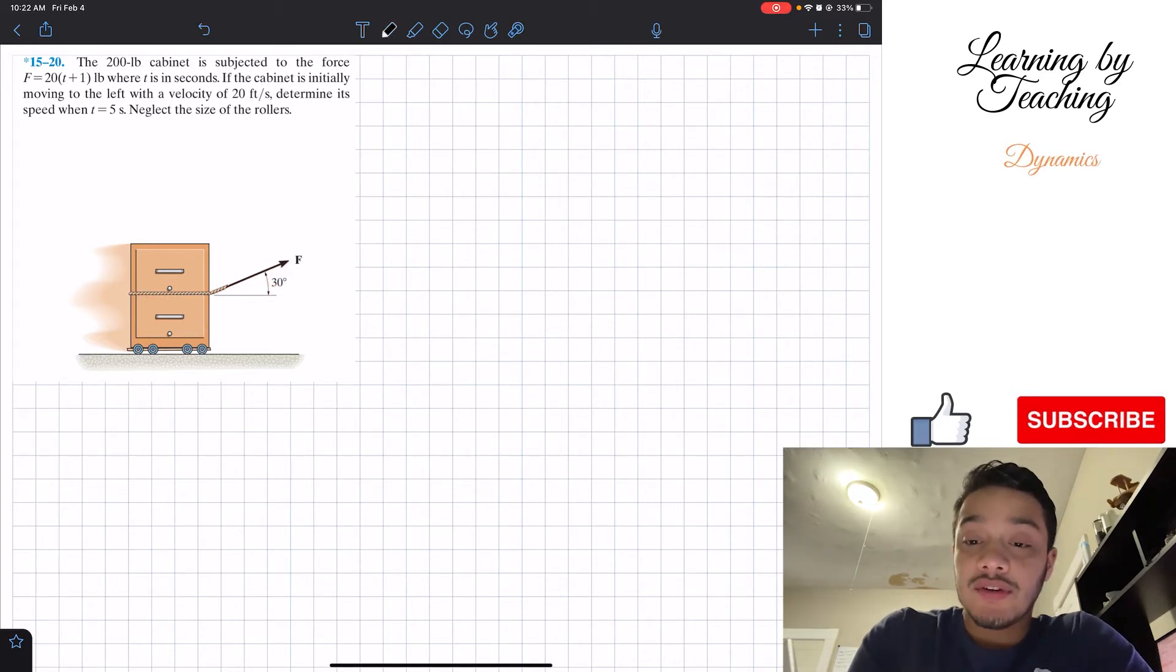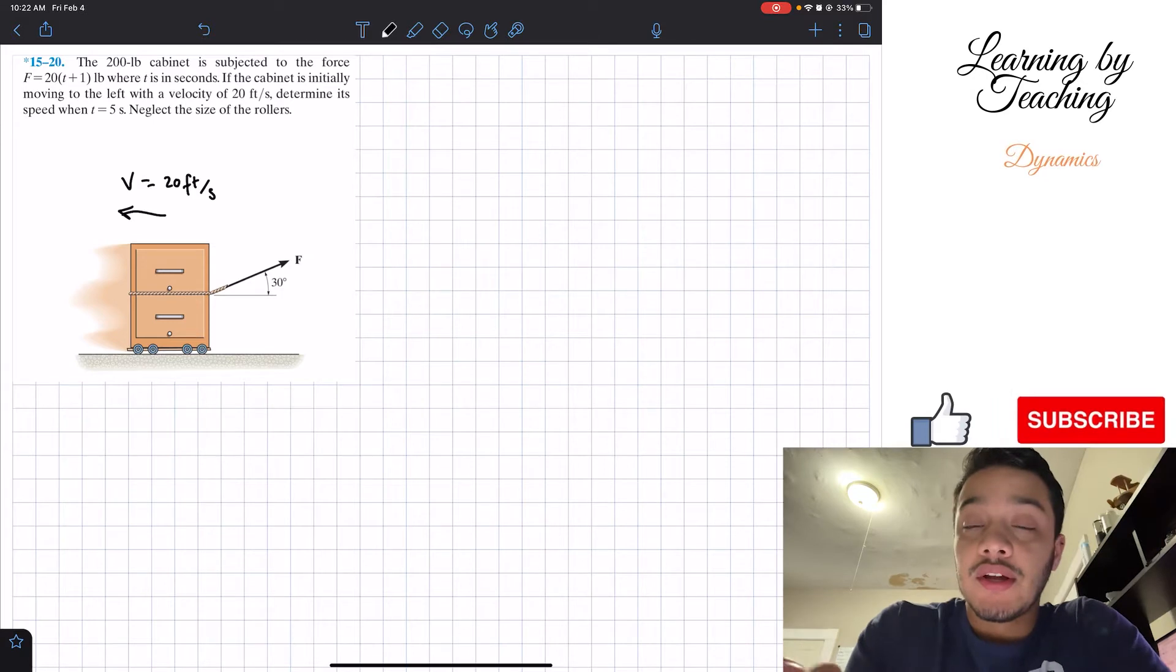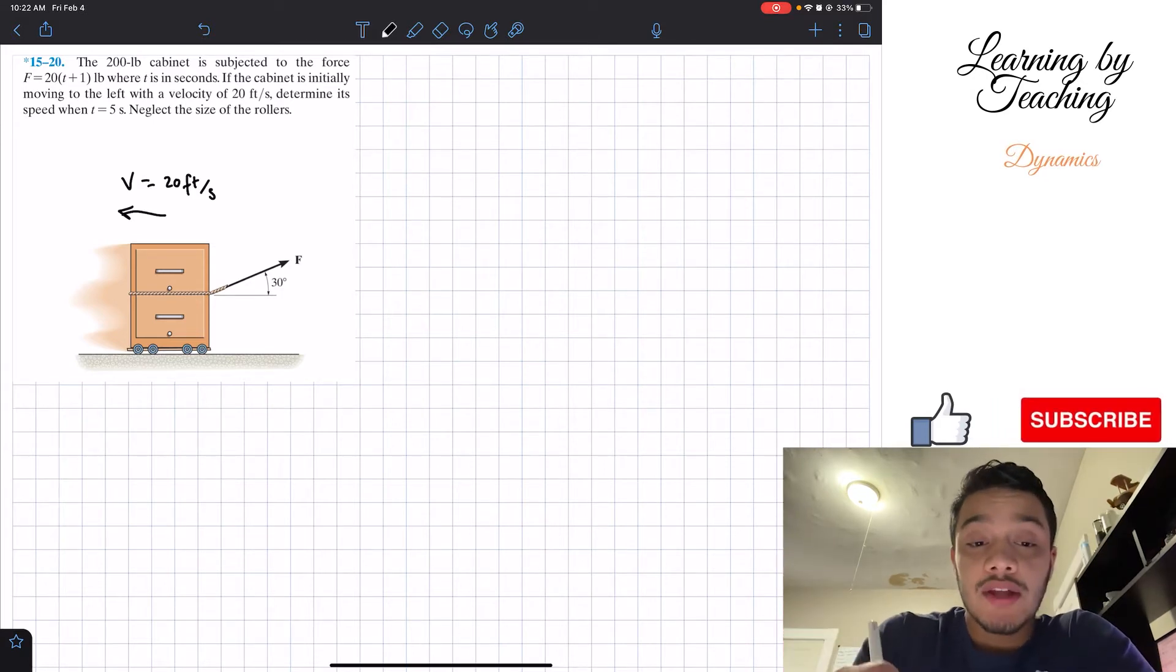So we're also given that this cabinet is moving to the left with a velocity of 20 feet per second. I just want to note that into our, let's call it a free body diagram even though it's not a real one. So in order to start this problem, let's write out our givens.